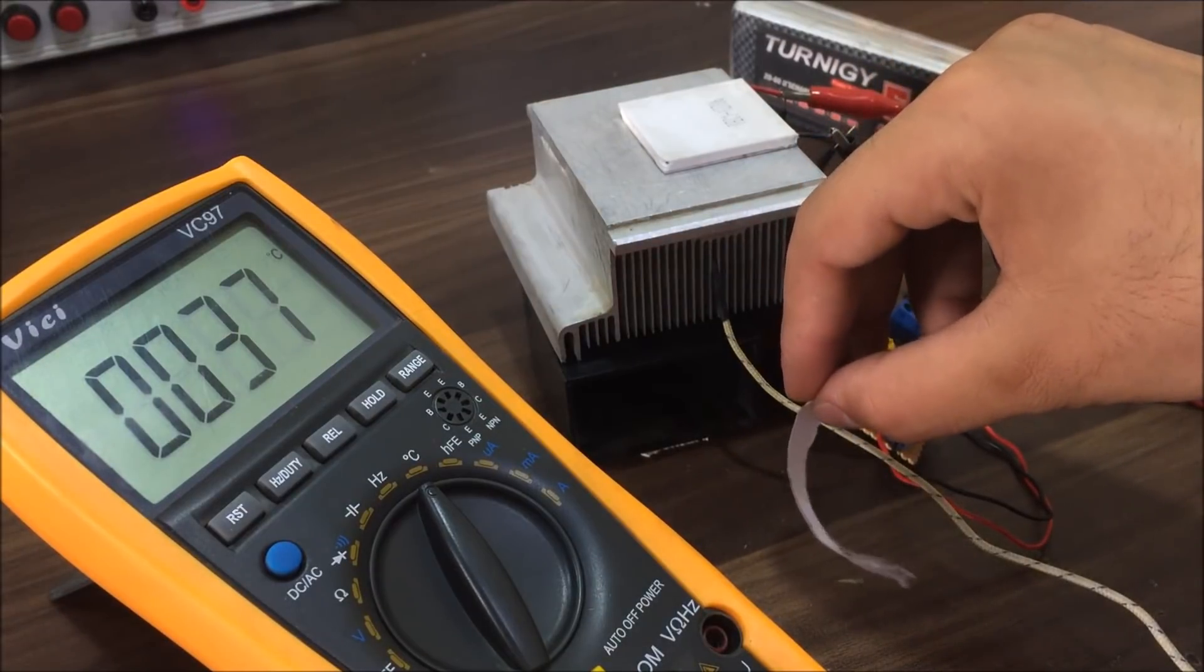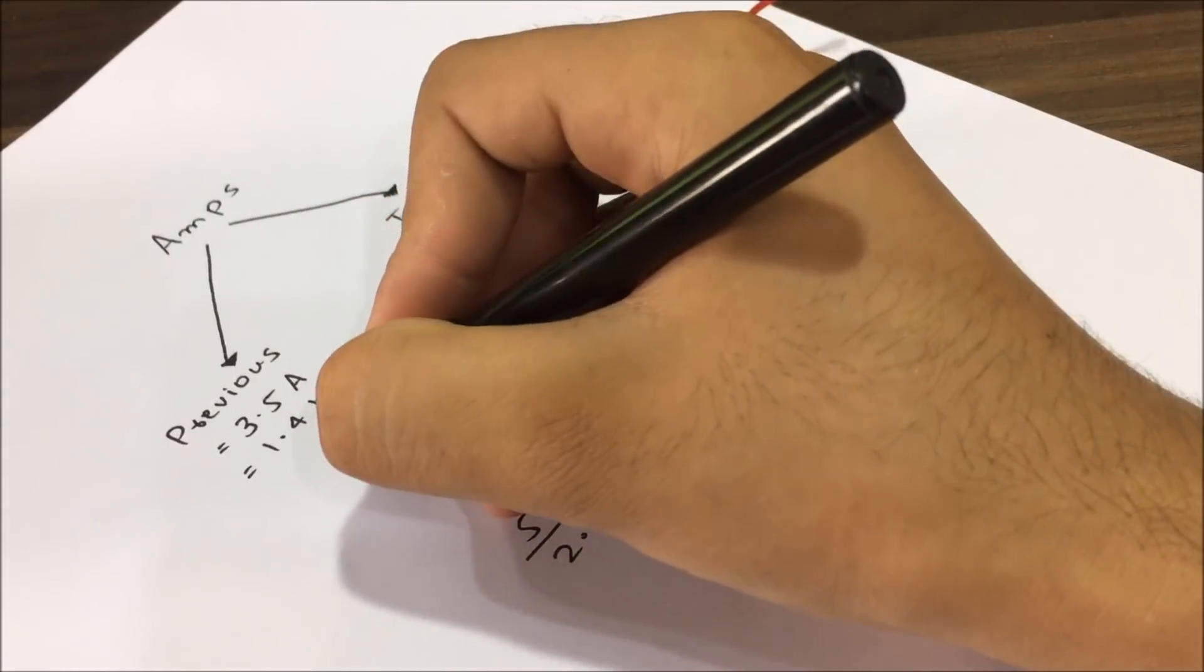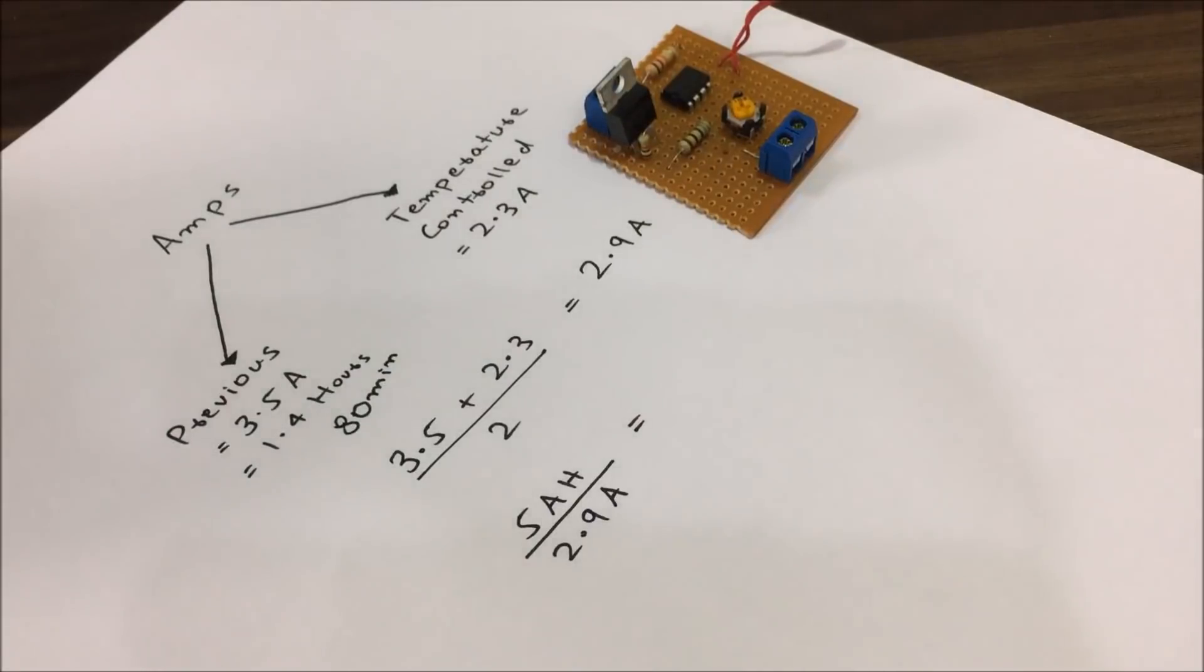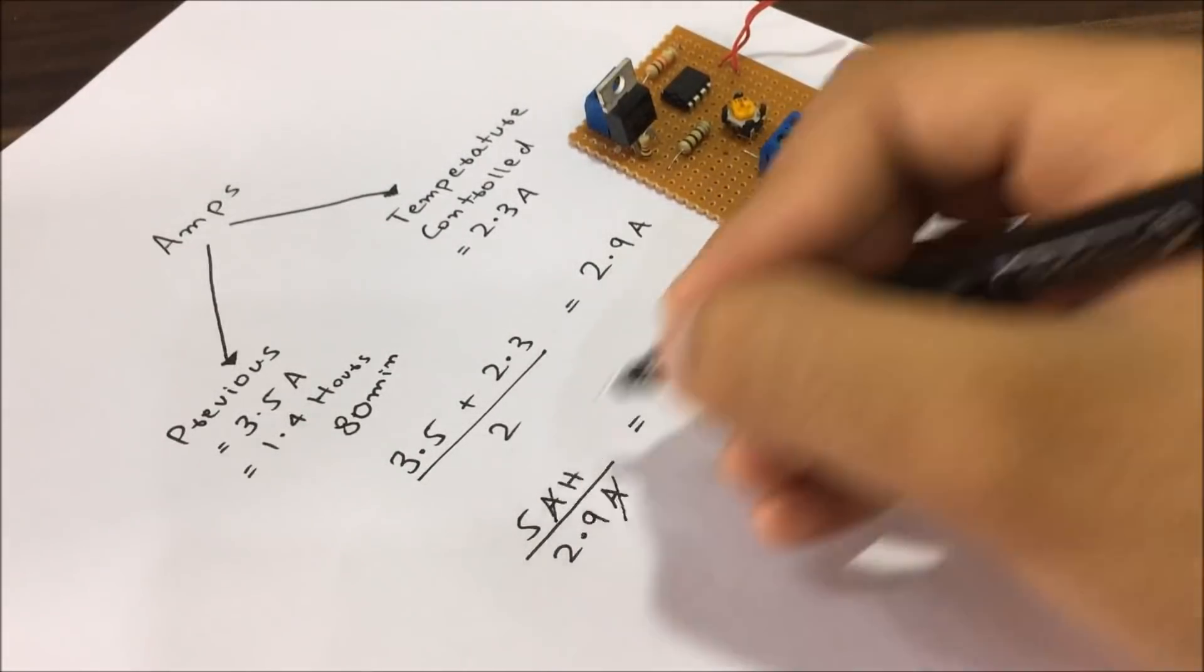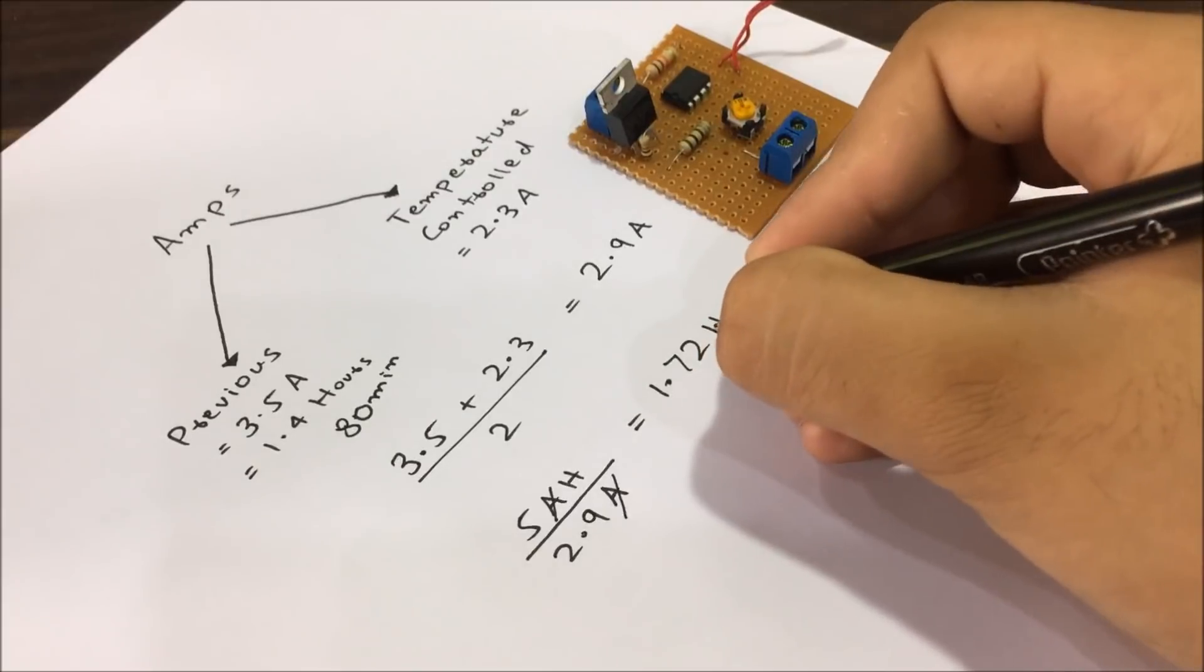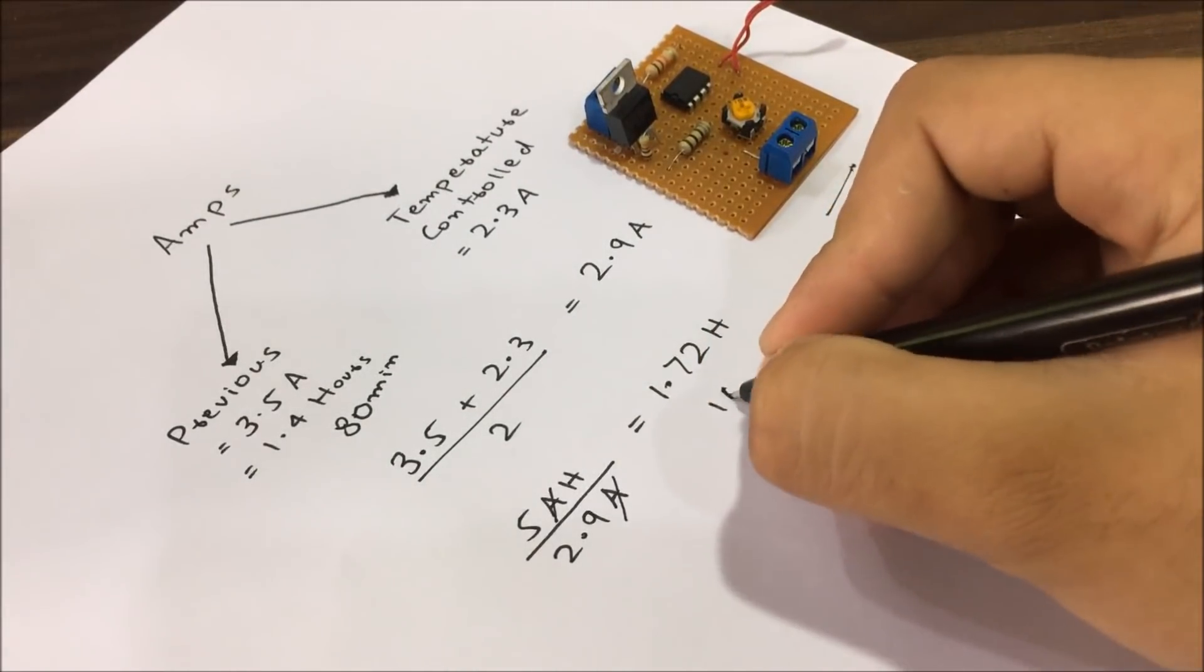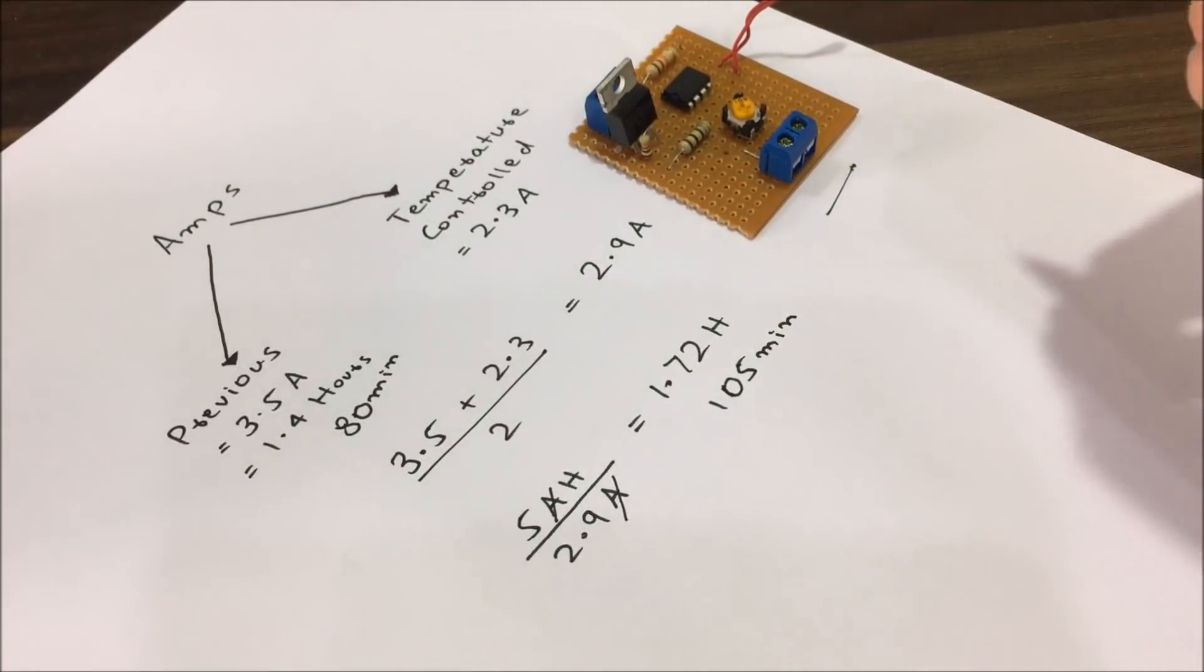Okay, now let's come to the conclusion. The previous run time we get is 1.4 hours, which is around 80 minutes. So, after installing the temperature control circuit, we get a current consumption of 2.9 amps. By this 2.9 amps, we get a battery run time of 1.72 hours, which is about 105 minutes.